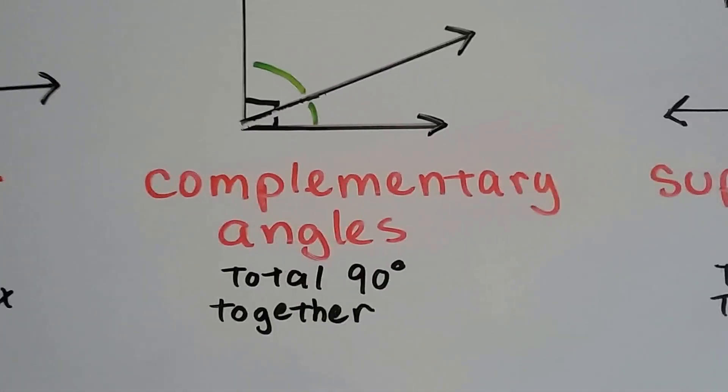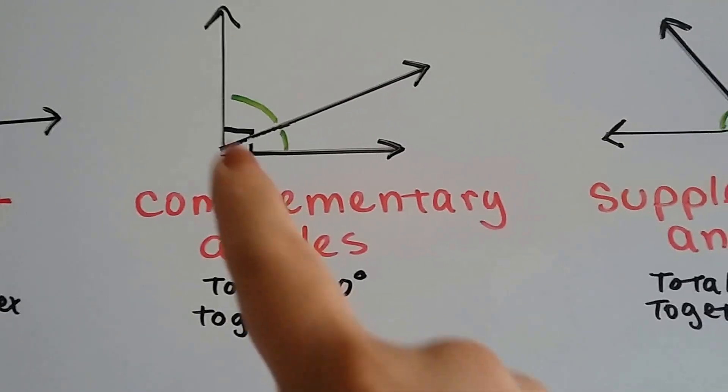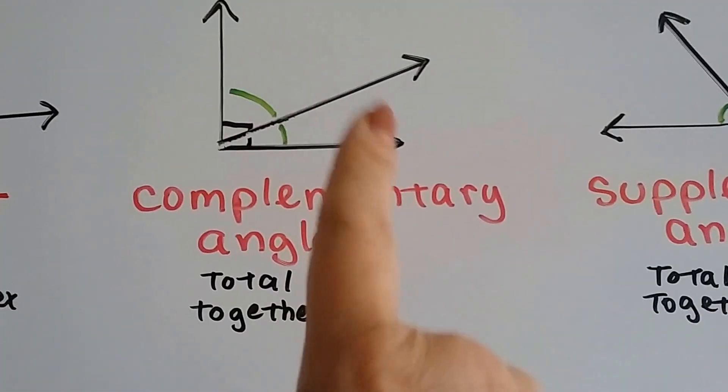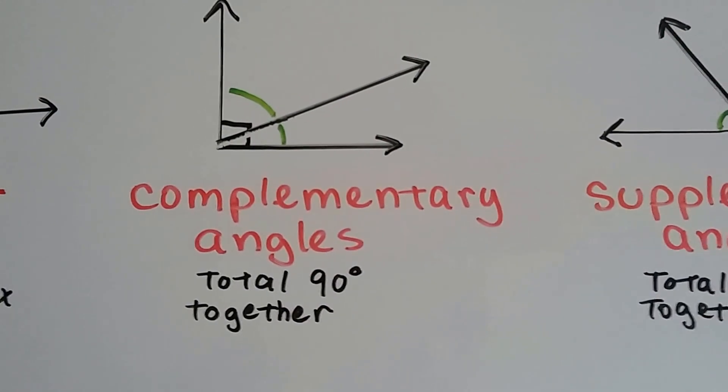Complementary angles, they total 90 degrees together. You can see the little box showing it's a right angle, and this angle plus this angle would total 90 degrees.